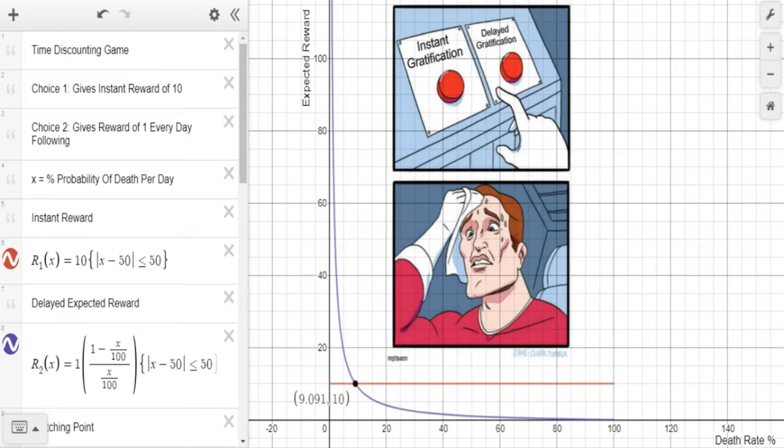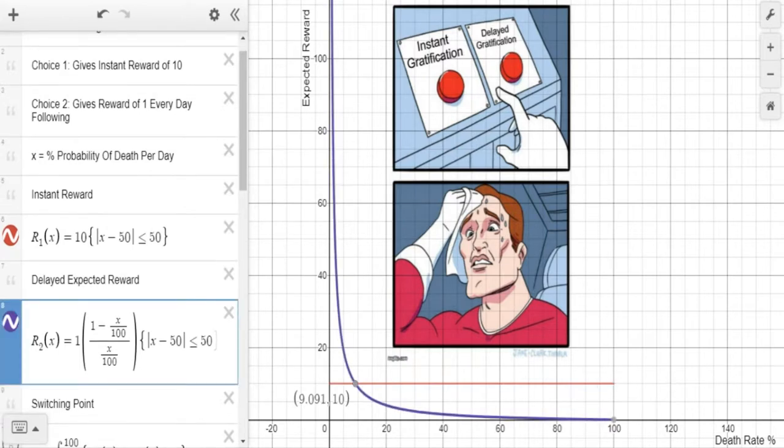So you would like to maximize the reward you get. However, you're going to die eventually. And so right here, we have mapped out x is the probability of death. So we have a death rate and percentage, we have 100% on one side, and we have zero all the way here.